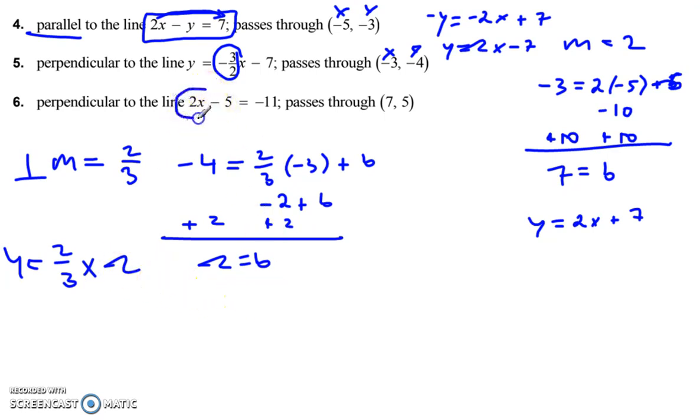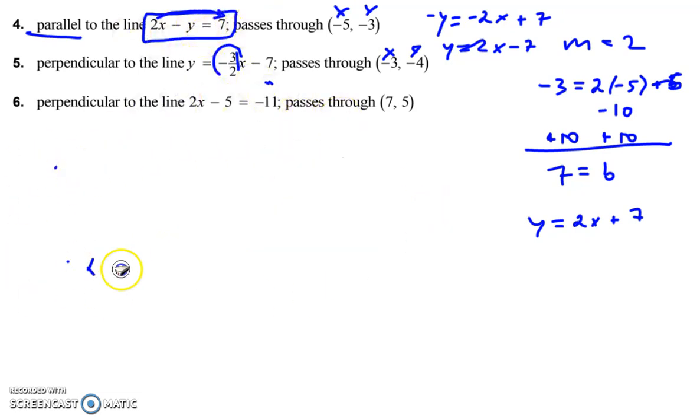Same procedure here. Put it in slope-intercept form. Wait a minute. Notice there's no y. Stop. Slow down a little bit. We're rushing. There's no y. So we add 5 to each side plus 5. We get 2x is equal to negative 6. Divide by 2. x is equal to negative 3. What does that mean?